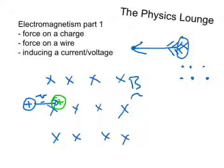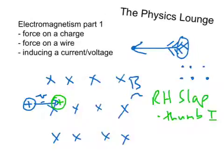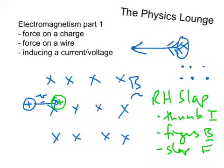And we use something called the right-hand slap rule to work this out. Your thumb is in the direction of the current, or the conventional current. Your fingers give the direction of the magnetic field. And your slap is the force, or the direction of the force.